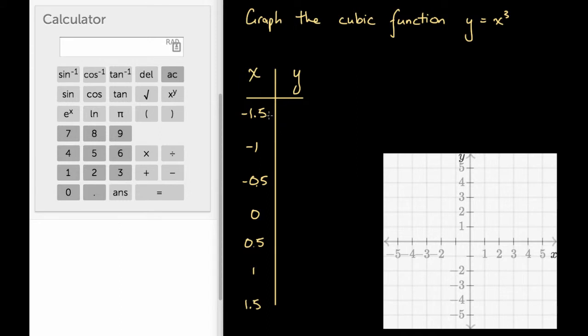They're all 0.5 units apart. So let's go ahead and evaluate these seven x values. If we input minus 1.5 into this function, we get y equals minus 1.5 cubed. So this is the same as saying minus 1.5 cubed.